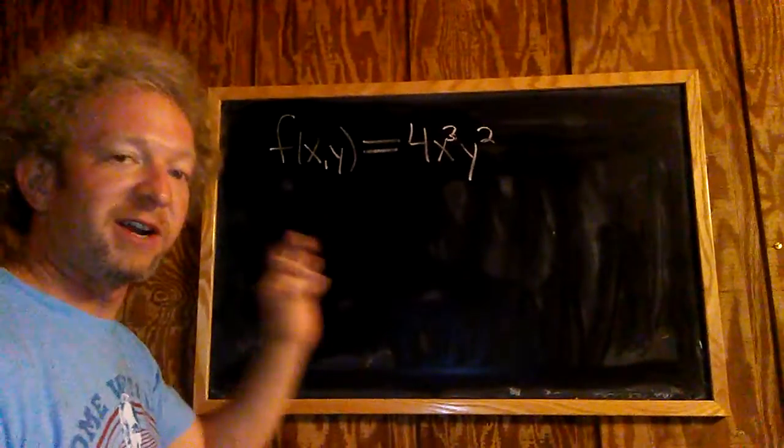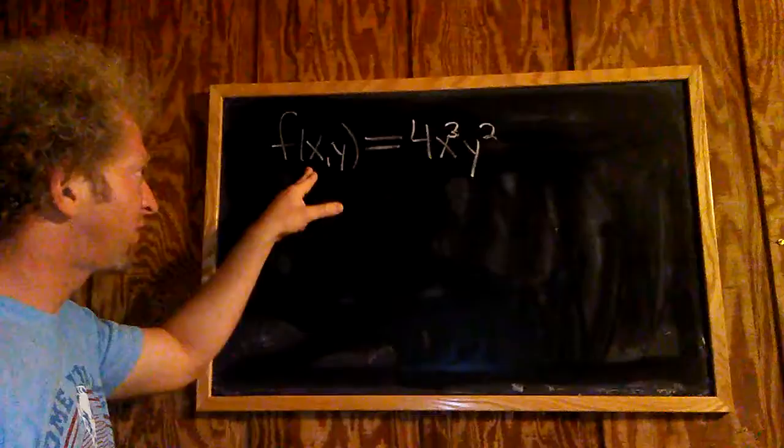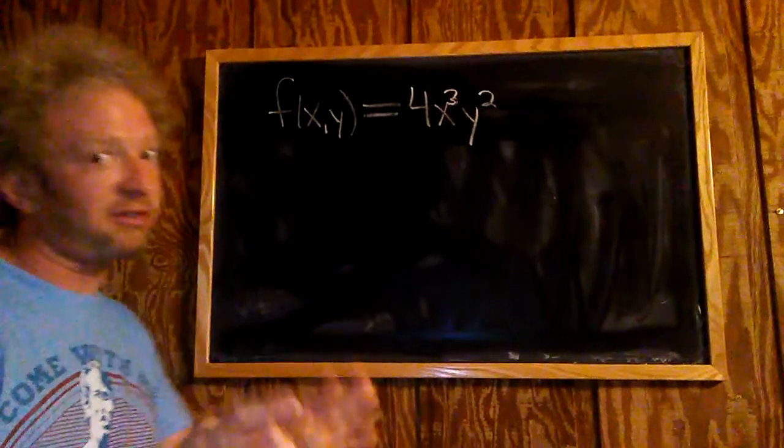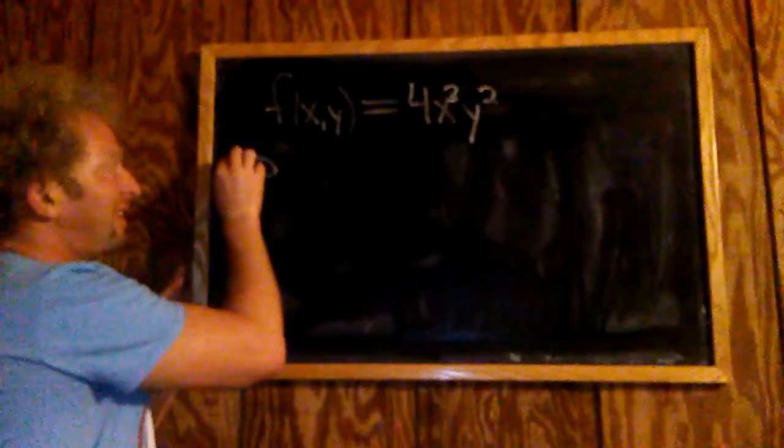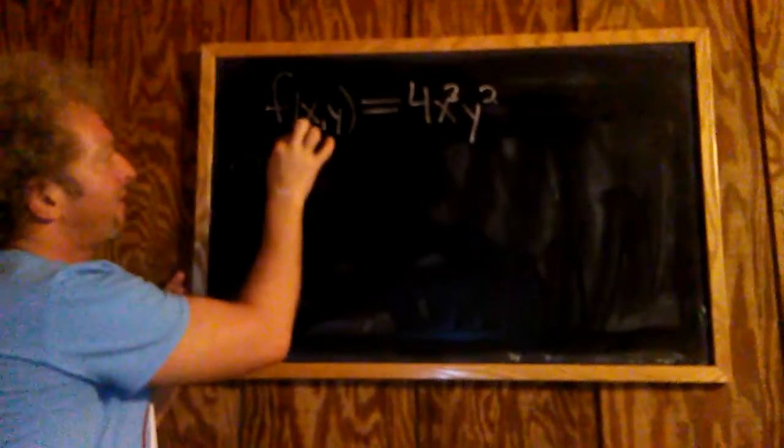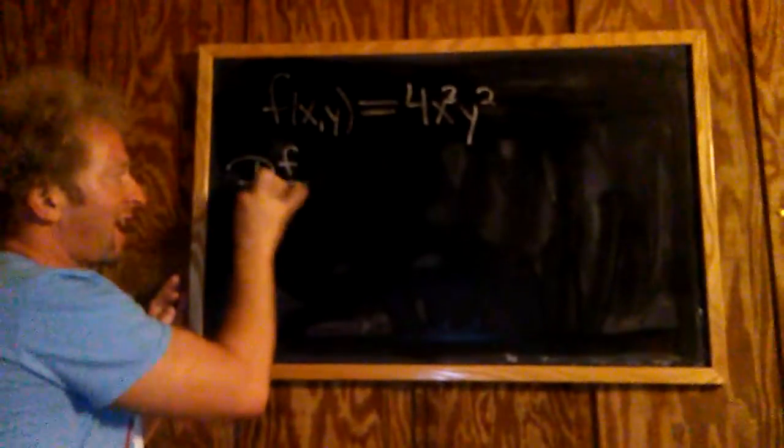So two variables, x and y, we're going to find the partial derivative of this function with respect to x first. It's very easy. So del, it's D-E-L, del f del x.